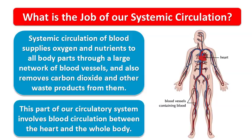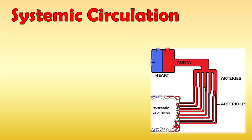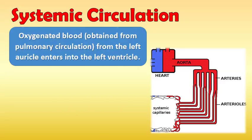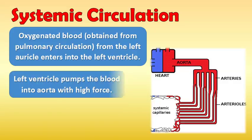Oxygenated blood obtained from pulmonary circulation enters the left auricle and then into the left ventricle. The left ventricle pumps the blood into the aorta with high force.